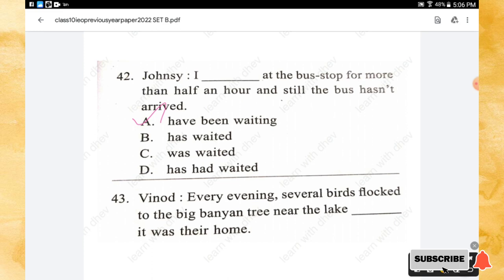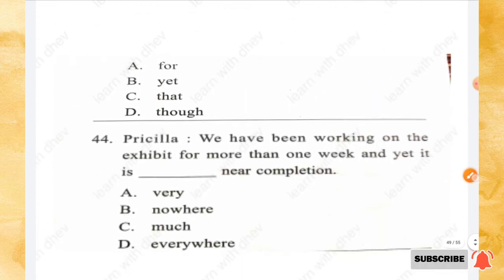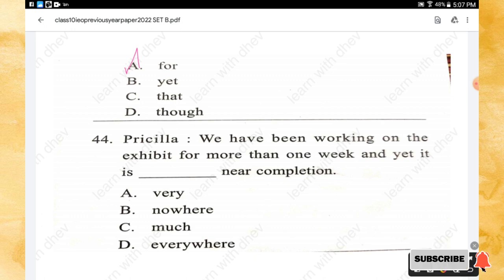Question 43: Every evening several birds flocked to the big banyan tree near the lake, _____ it was their hope. Options: far, yet, that, to. The right answer is option A — for, it was their hope. Question 44: We have been working on the exhibit for more than one week and yet it is _____ near completion. Options: very, nowhere, much, everywhere. The right answer is option B — nowhere near completion.